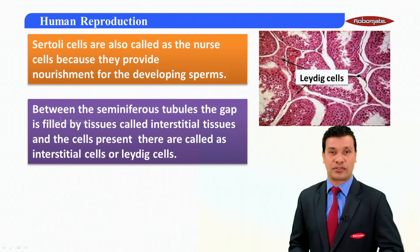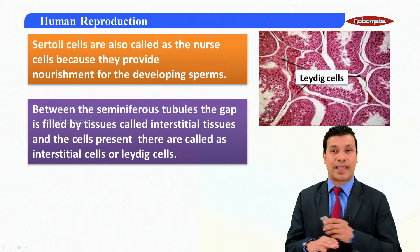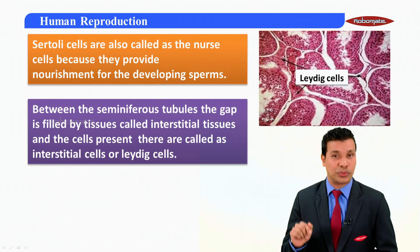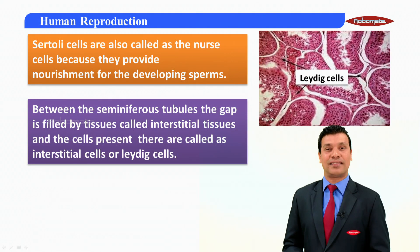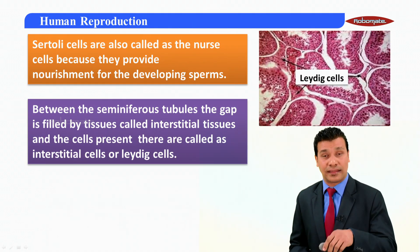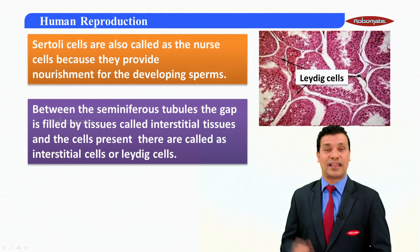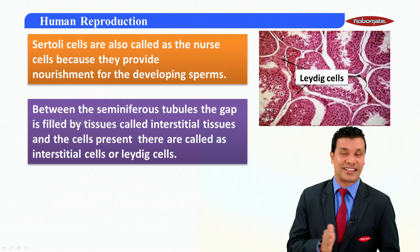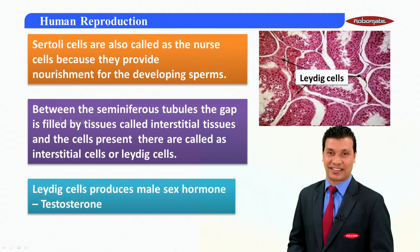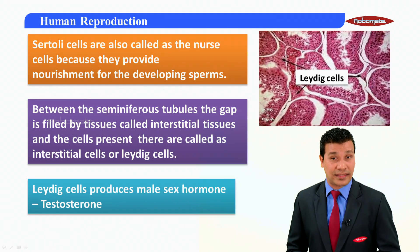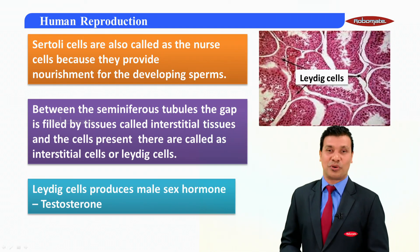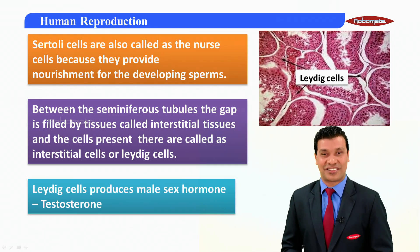Between the seminiferous tubules the gap is filled by tissues, and this tissue is called the interstitial tissue. The cells present there are called the interstitial cells or the Leydig cells. The Leydig cells produce the male sex hormone which is known as testosterone.